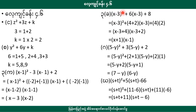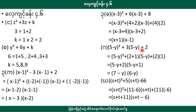H minus 3 the whole square plus 6 into H minus 3 plus 8. H minus 3 the whole square. H minus 3 plus 4 the whole square. H minus 3 the whole square. H plus 1 the whole square. H minus 1 the whole square. 5 min 1 the whole square plus 3 into 5 min 1 plus 2. Bit 2 minus 4 the whole square by 3.